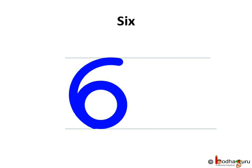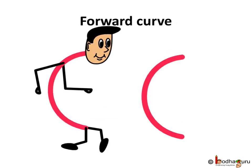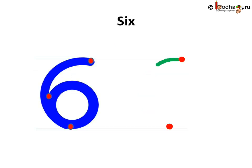How do we write 6? Let us write it. Remember the backward curve, the curve looking back, and the forward curve looking in the forward direction? Let us use both of them. Now we will write number 6.